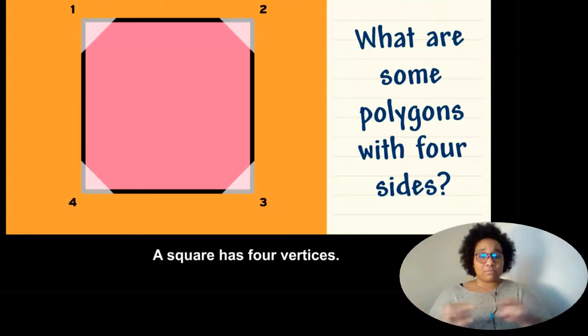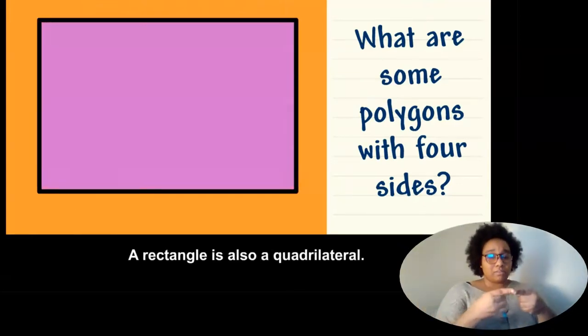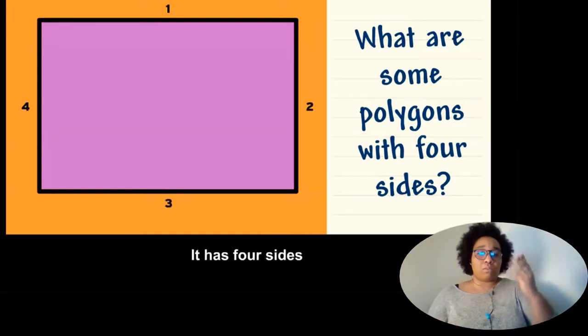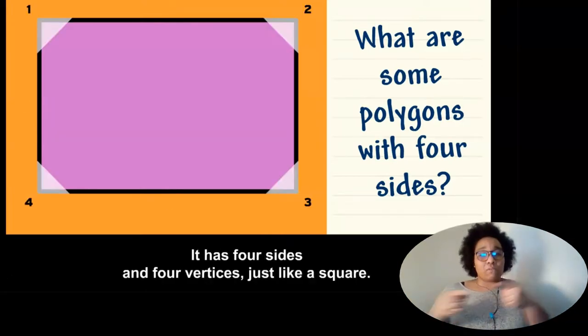A rectangle is also a quadrilateral. It has four sides and four vertices, just like a square, but a rectangle has two pairs of equal sides.